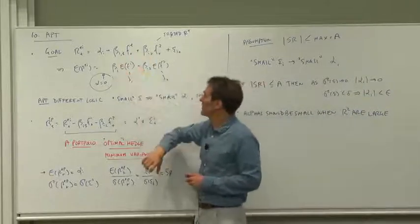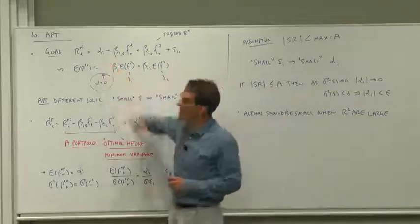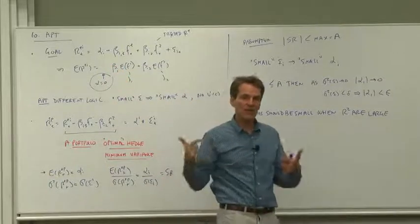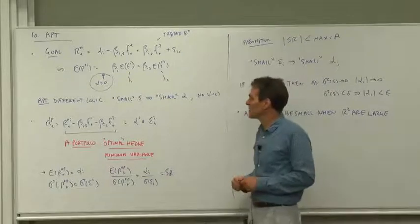Our goal is to derive a factor model. Our goal is to find some logic that that alpha should be zero, but we're going to try it from a different way. We're not going to go from the consumption-based model.